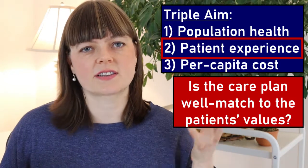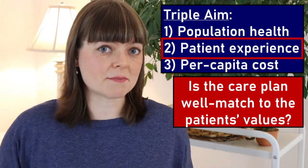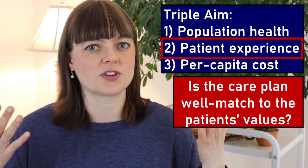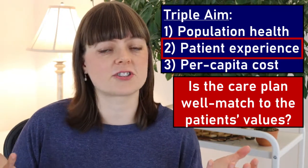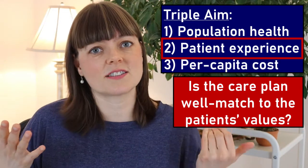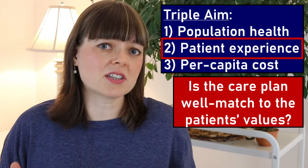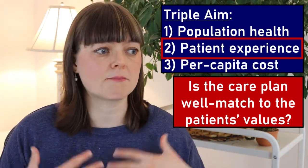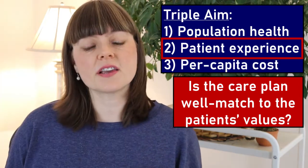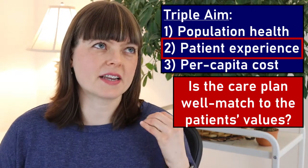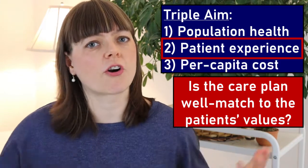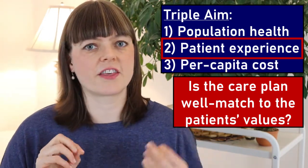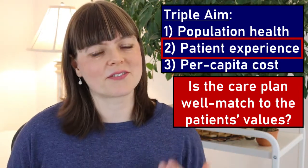It also encompasses things like: is the patient's care plan well matched to the patient's values? Sometimes there's a trade-off between expected lifespan and quality of life — your ability to interact with family, your ability to function independently. We don't want to necessarily say the right medical decision is always the life-extending one, especially for terminally ill patients. We want to make sure the care plan is weighed against the patient's goals for their life, which can be more complex than just extending life.